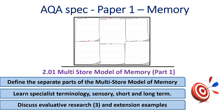We'll discuss a bunch of evaluative researchers and we'll also look at how each part of the model is coded, its duration and its capacity. We'll learn how information is passed from one store to the other, and also how information is lost from each store. If we know that, we'll know the multi-store model of memory.